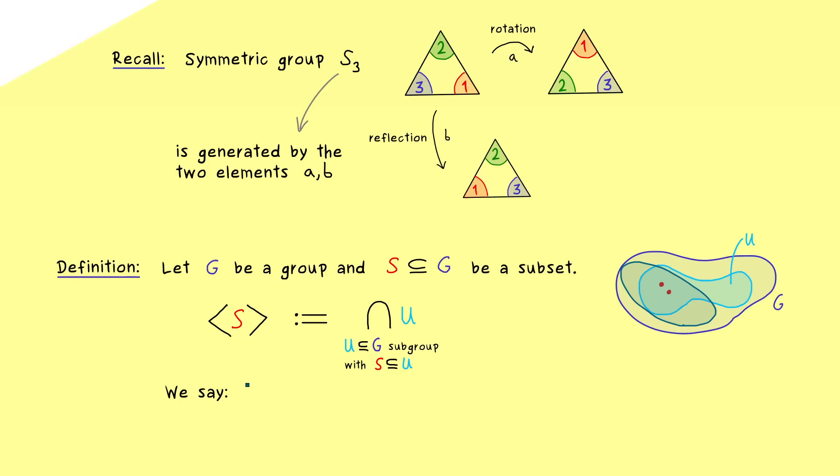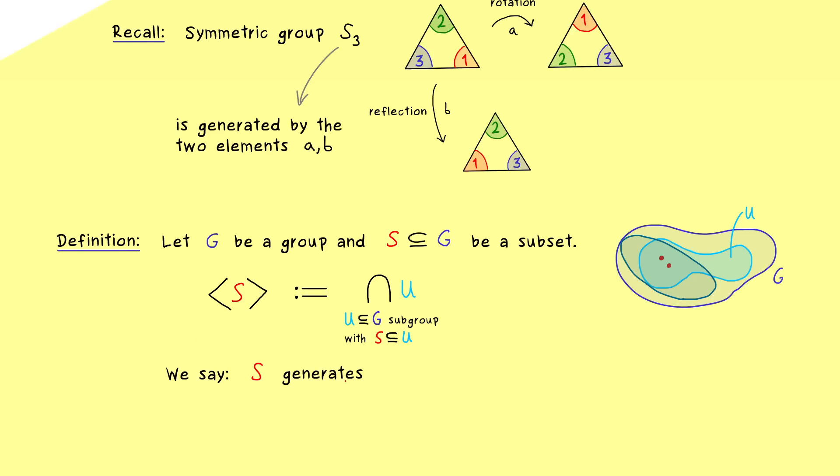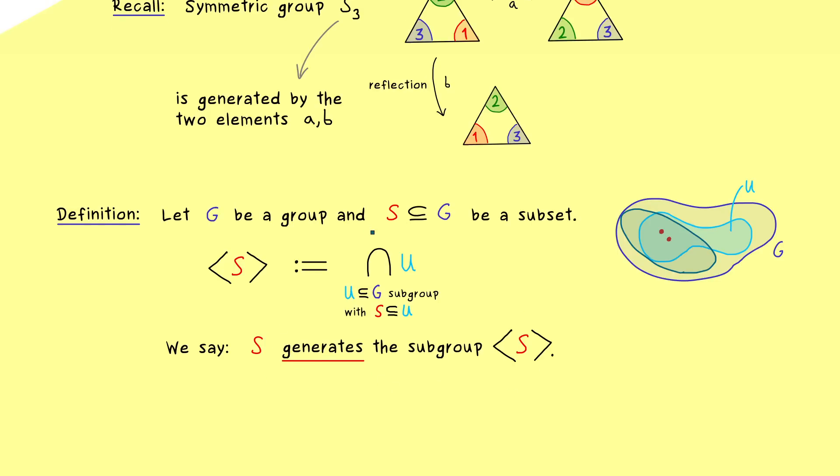In an active form we say S generates this new subgroup. Hence this generation process we have already used above is explained. And with that we might have an efficient way to define some particular groups.